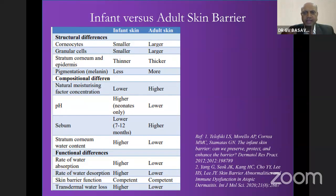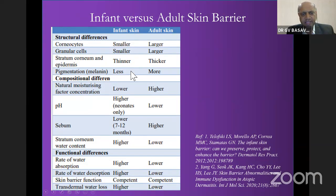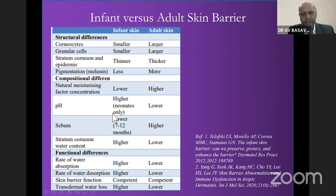When you look at the difference between adult skin and infant skin: infant skin's corneocytes are fewer, granular cells are smaller, the stratum corneum and epidermis are thinner, and pigmentation is less compared to an adult. This is very relevant as a barrier — when these structures are smaller, fewer, and thinner, the skin is more susceptible. Natural moisturizing factor concentration is lower, pH is much higher in a neonate, sebum production is very low especially from 7 to 12 months, and stratum corneum water content is higher compared to an adult.